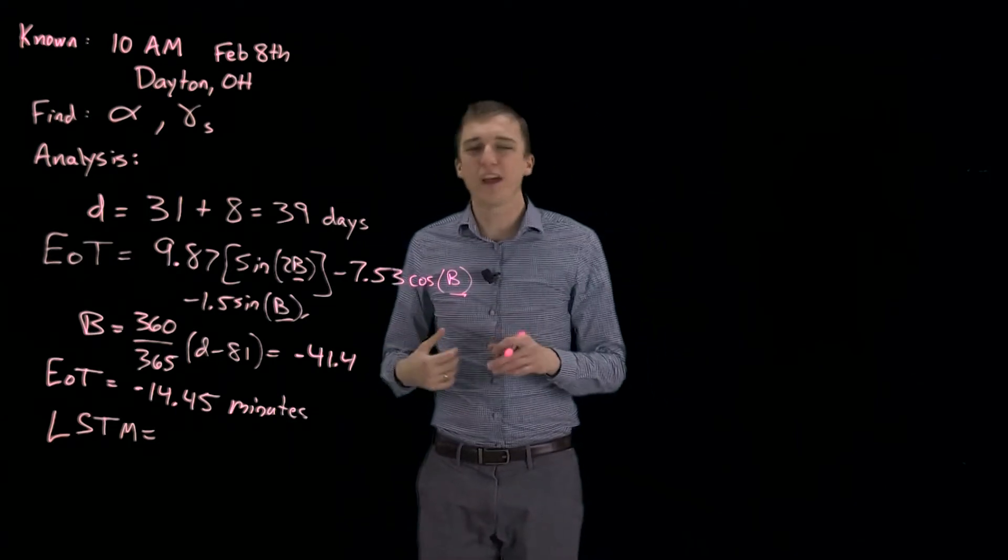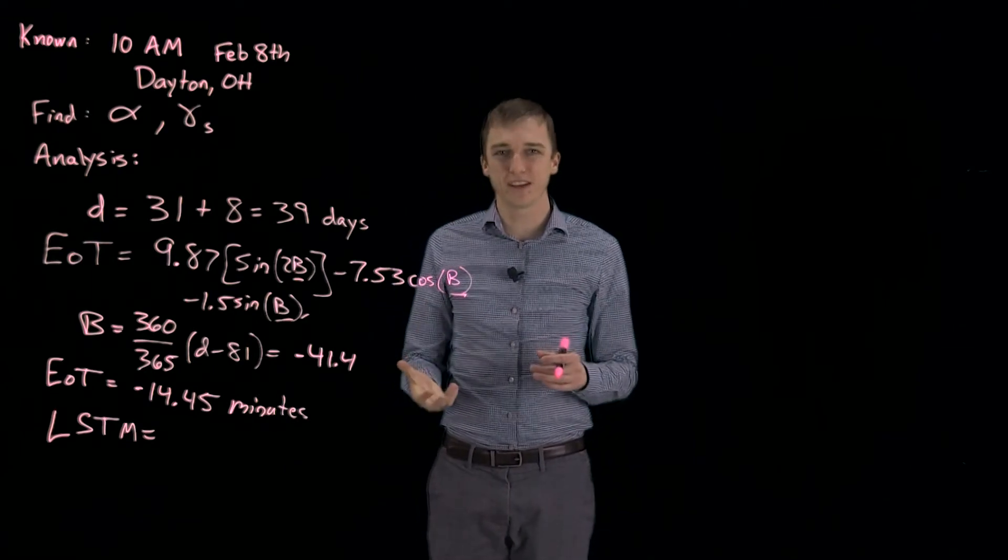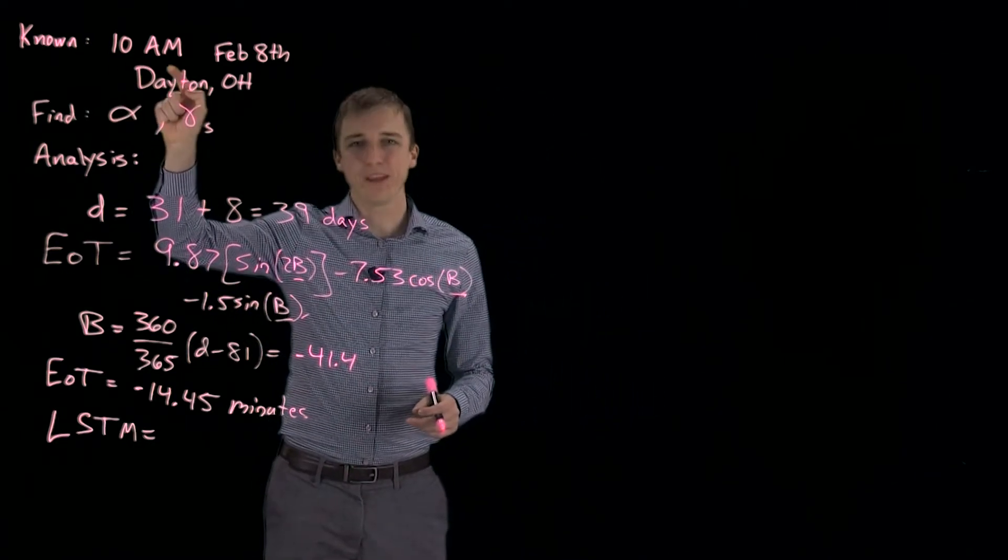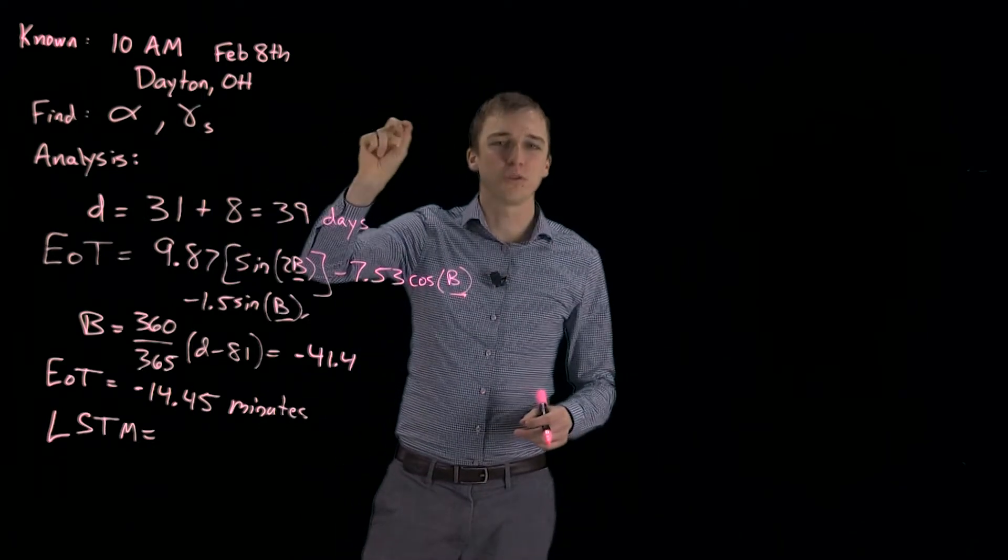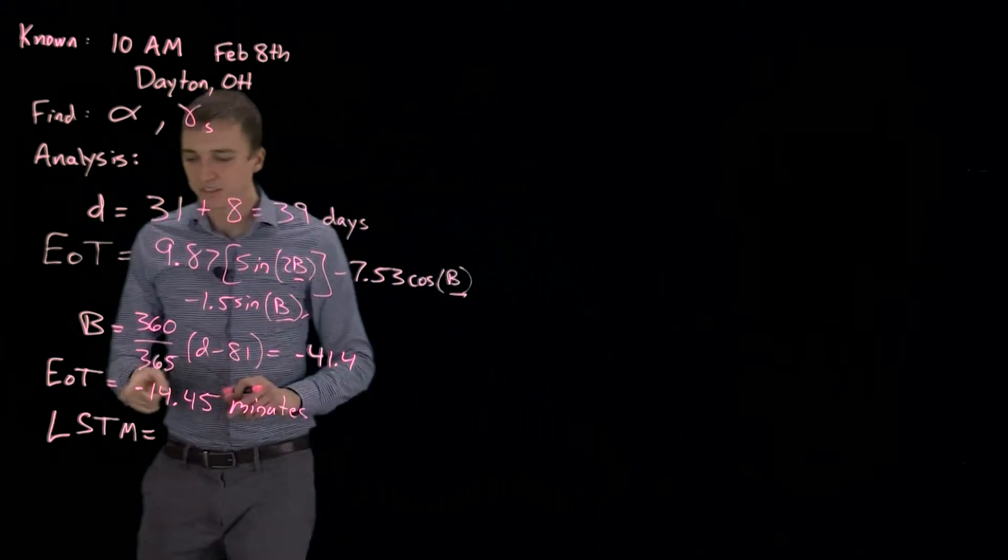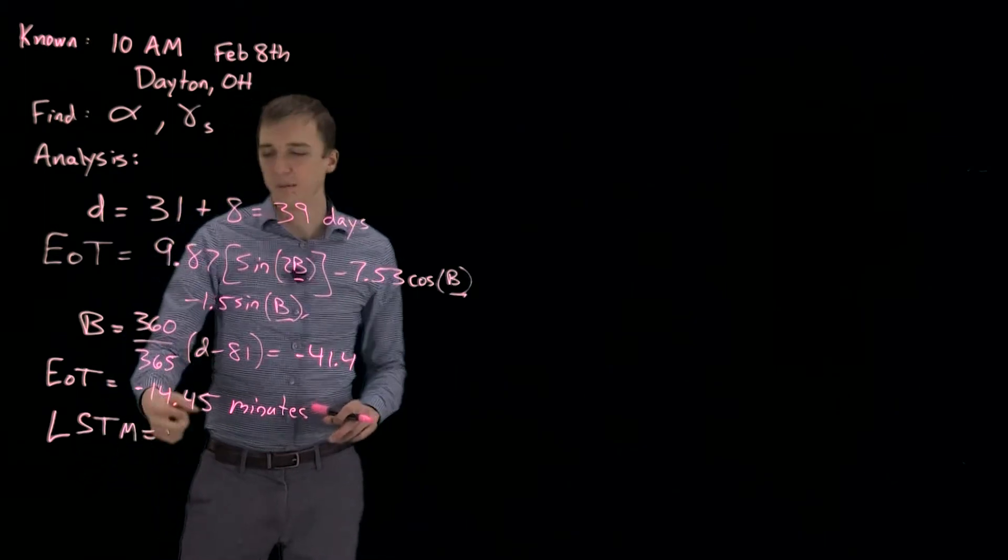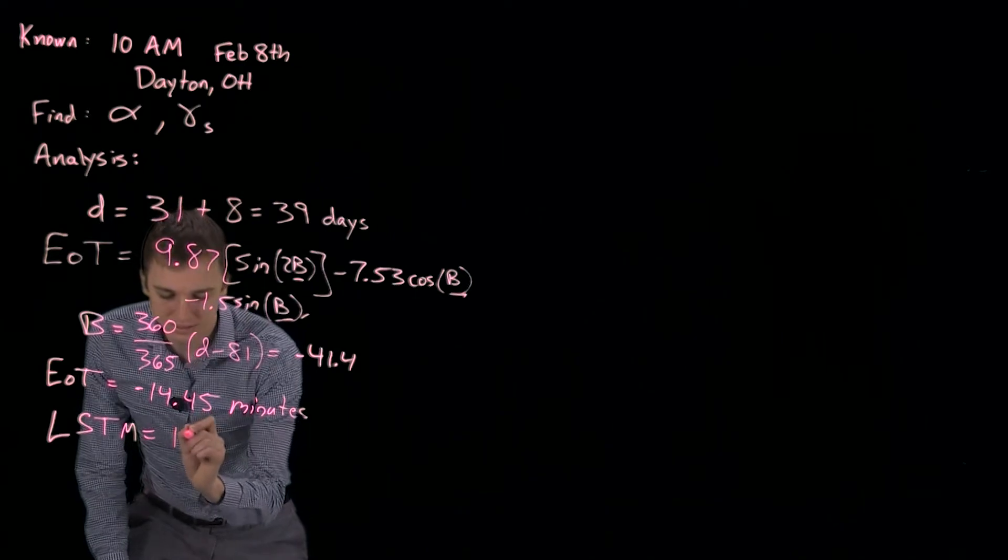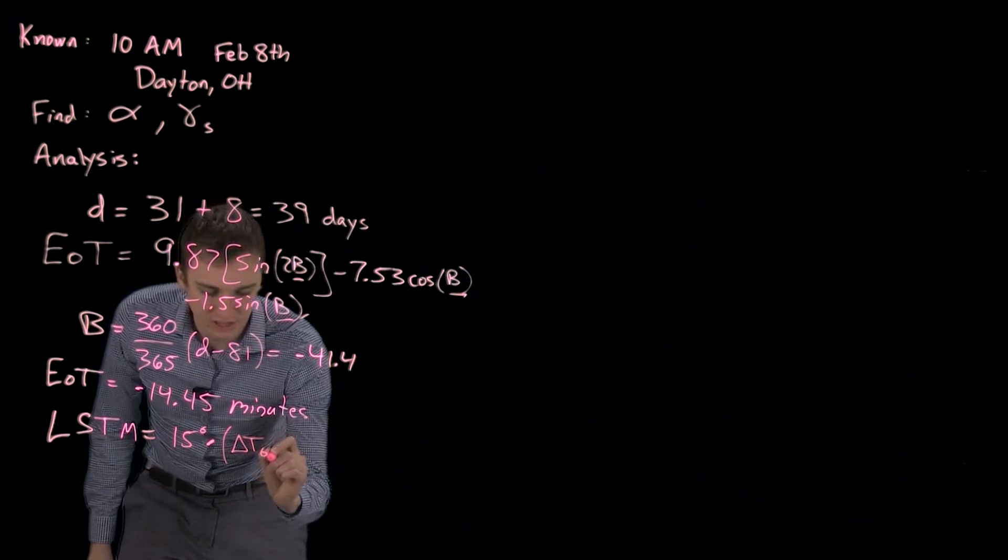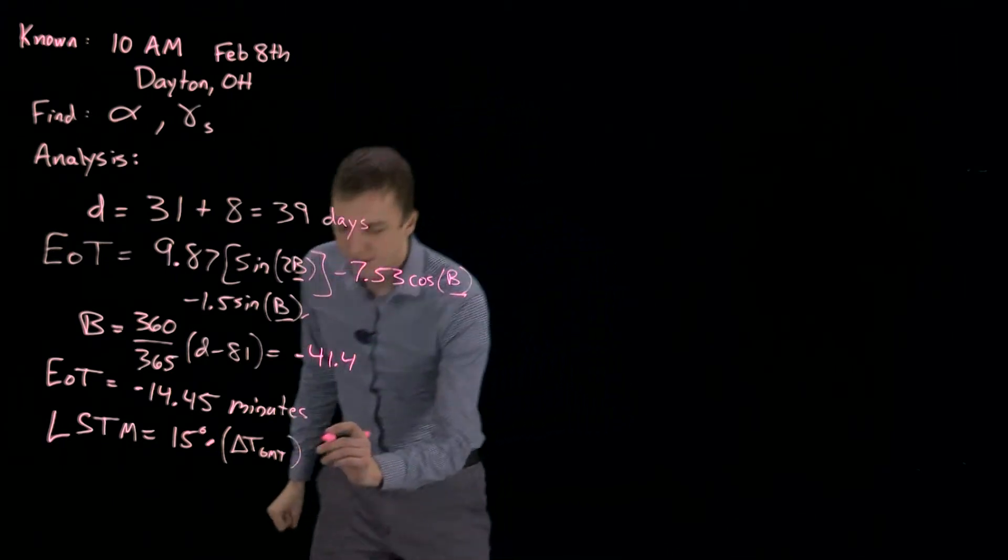So we used to have local solar time, LST, which was when the sun was directly over our heads. But then we standardized time with time zones and daylight savings. So we need to adjust 10 a.m. in man-made time and get it into local solar time, corresponding to when noon is the sun is directly overhead. So first, to do that, we find the meridian that our time zone is calibrated to. To do that, we multiply 15 degrees by delta T GMT, or how many hours away we are from GMT time, or the prime meridian time.